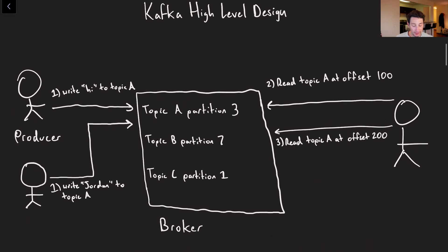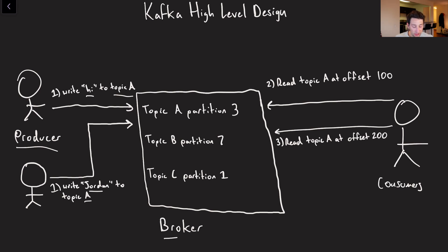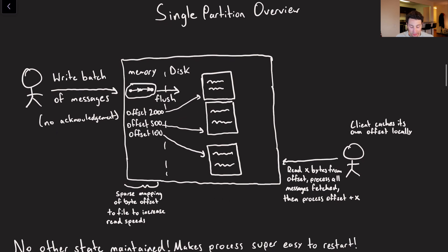Now that we've cleared all of that up, let's talk about the actual high-level design of Kafka itself. Just like any other message broker, we've got a bunch of producers, and then on the right we also have some consumers. Every single message goes into a topic — we can write some amount of data into it. So I can write Jordan and hi over to topic A. On our Kafka broker, we can be storing partitions of every single topic. Then from our consumer, we'll first read a given topic at a certain offset, read a sum amount of bytes, and then add that byte total. So if we read 100 bytes, the next time around we'll read topic A from offset 200.